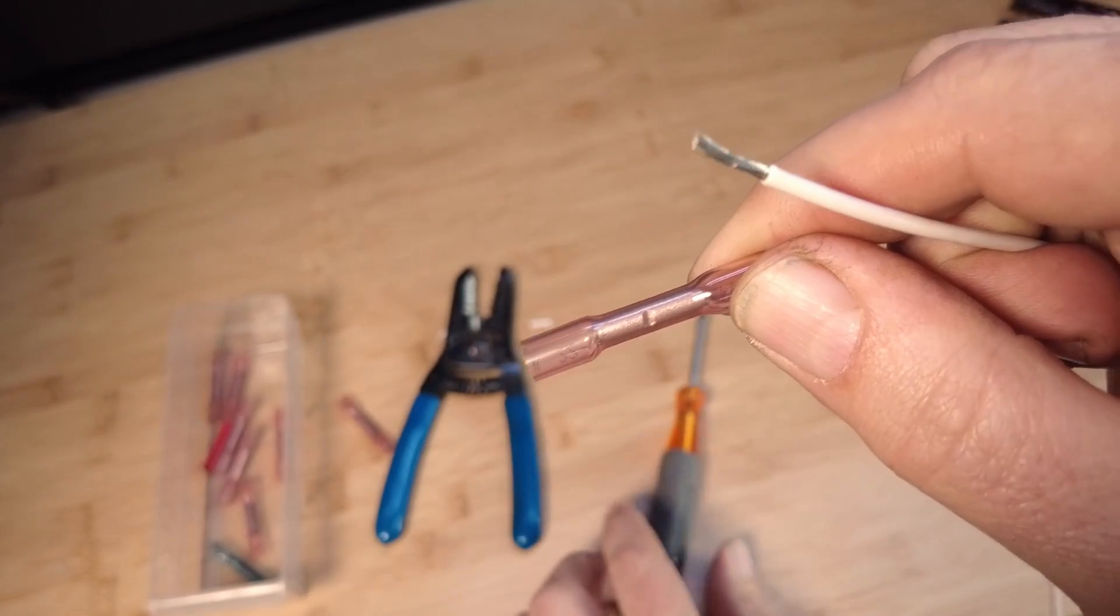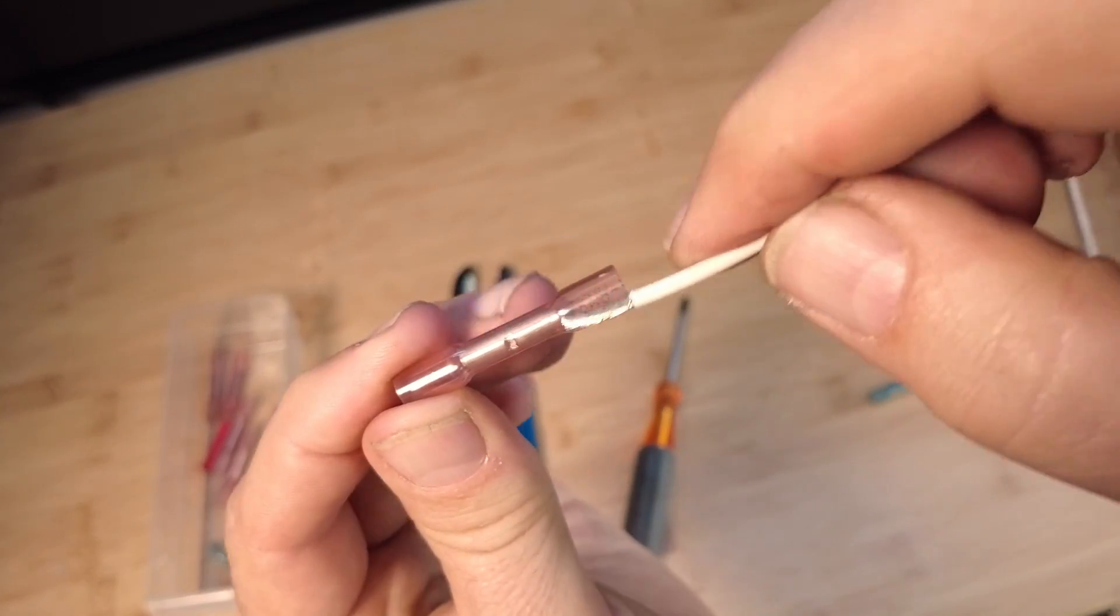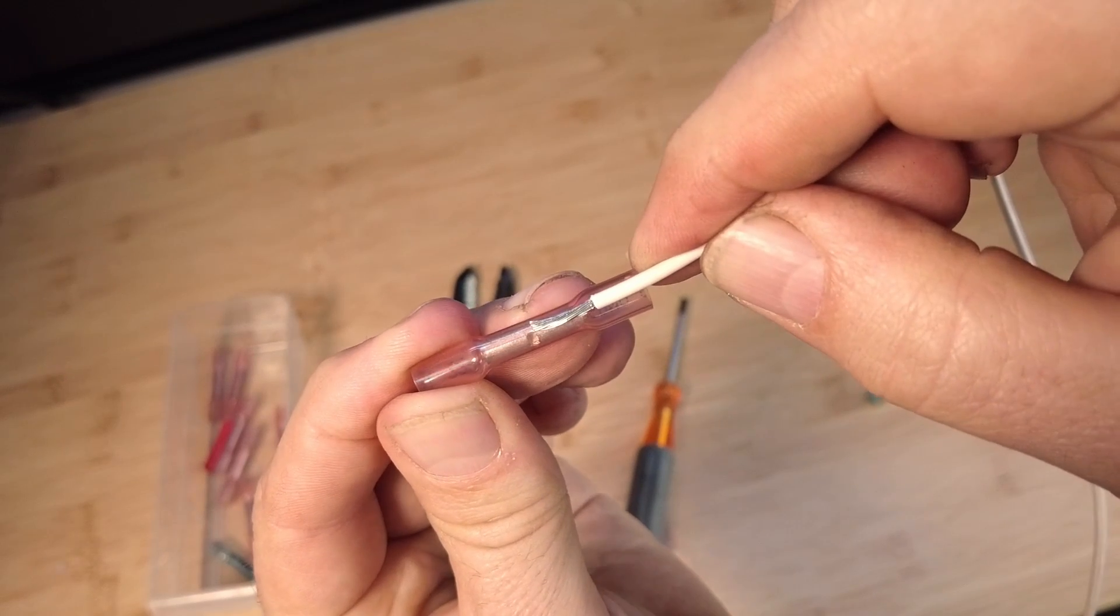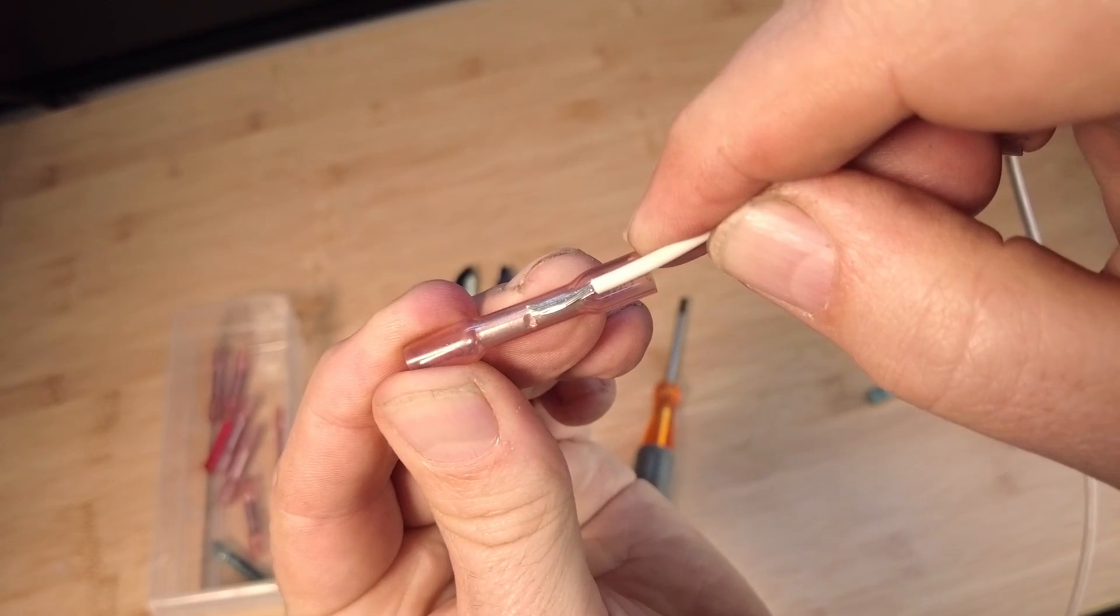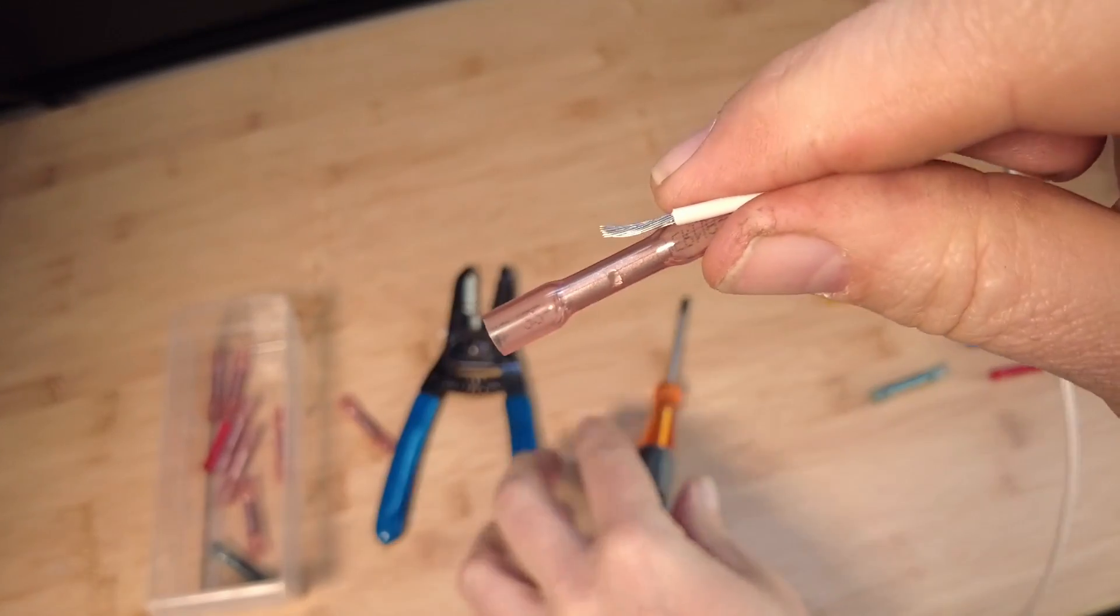So ideally what you want as far as stripping wire off, you want to make sure that it's long enough to go hit that indent plus a little bit more. If you strip the wire too short, for example, if I was only to strip the wire to here,